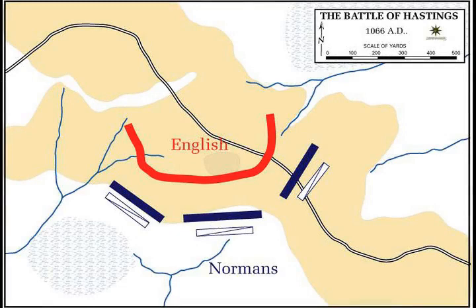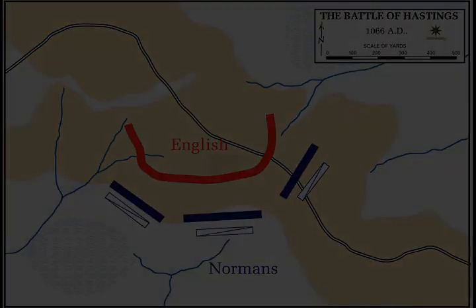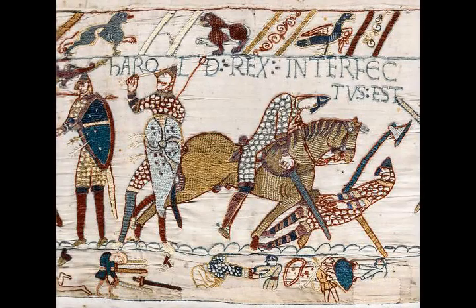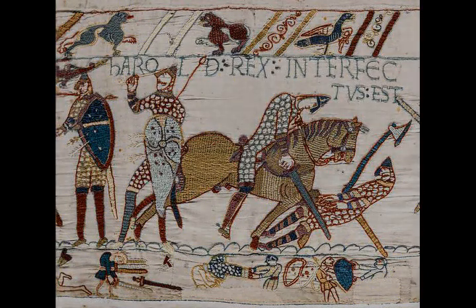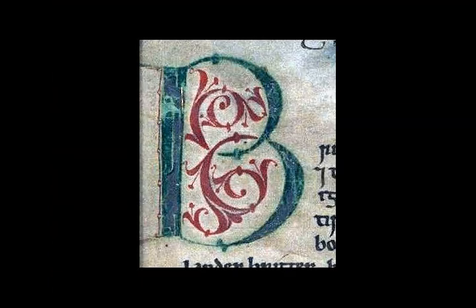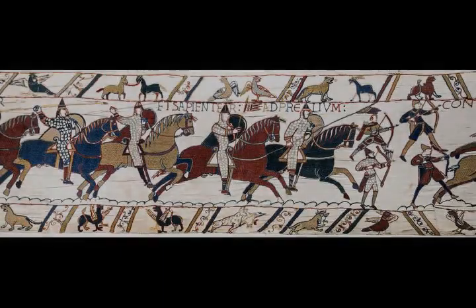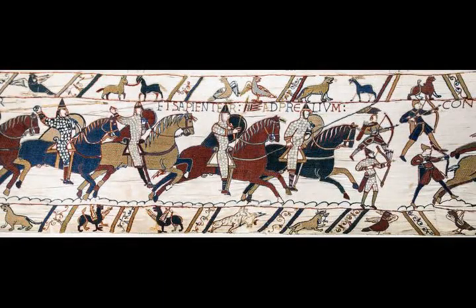Harold appears to have tried to surprise William, but scouts found his army and reported its arrival to William, who marched from Hastings to the battlefield to confront Harold. The battle lasted from about 9am to dusk. Early efforts of the invaders to break the English battle lines had little effect; therefore the Normans adopted the tactic of pretending to flee in panic and then turning on their pursuers. Harold's death, probably near the end of the battle, led to the retreat and defeat of most of his army.